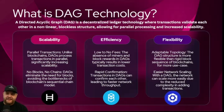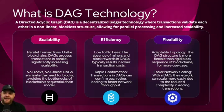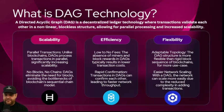A DAG is a directed acyclic graph — a decentralized ledger technology where transactions validate each other on a nonlinear, blockless structure, allowing for parallel processing and increased flexibility. DAGs can make things faster and more scalable without sacrificing too much security. That also depends on how the blockchain is run, how many nodes there are, how they're distributed, and whether anybody can be a node or if it's private.